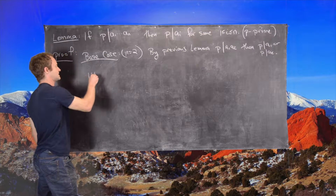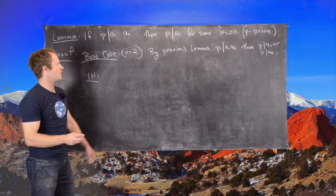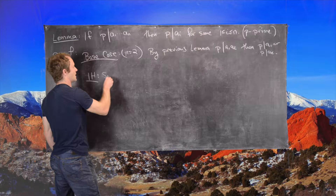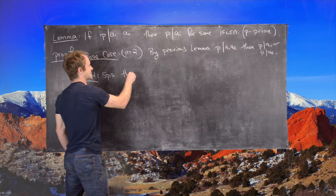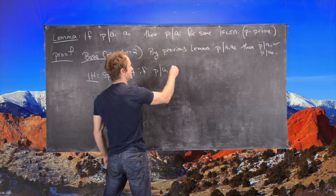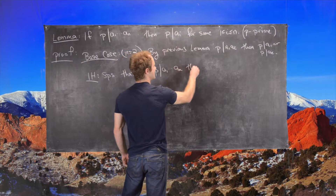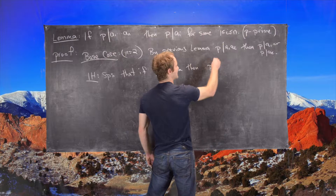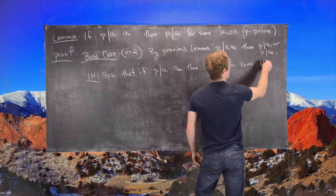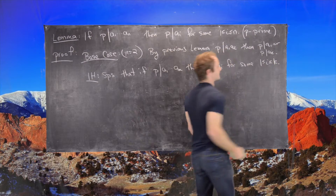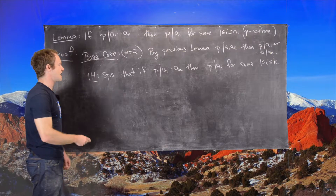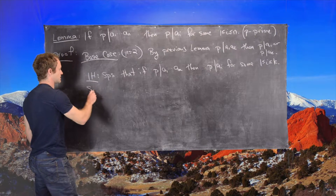Now for the induction hypothesis: for some arbitrary k, suppose that if p divides the product a1 through ak, then p divides ai for some i between 1 and k.